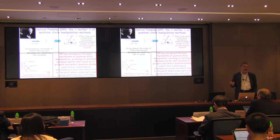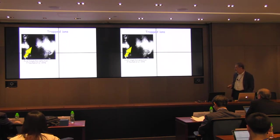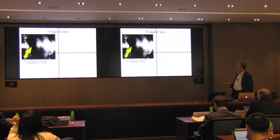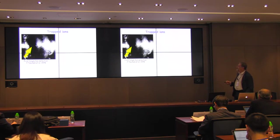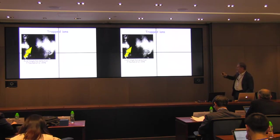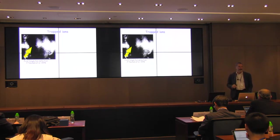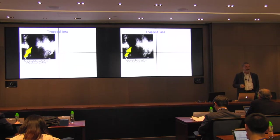On the next slide, I show an historical picture: the first single ion detection by Peter Toschek back in 1978. You see the laser light scattered on the electrodes of the trap, but there is a very small spot in the middle, which is a single barium ion scattering light into a microscope.